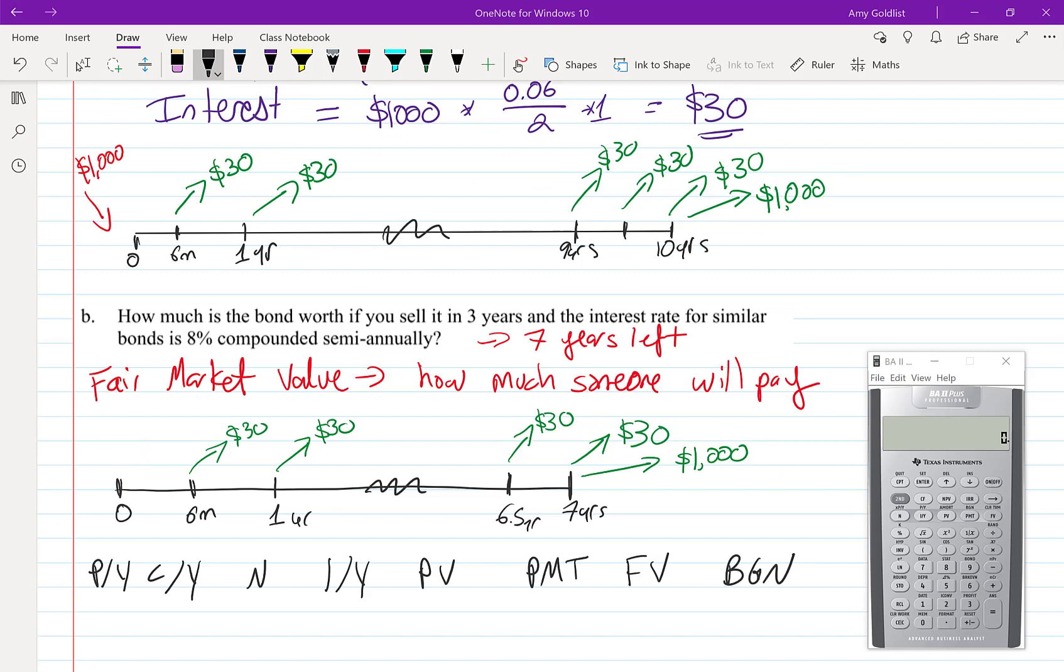Looking at this, we have the exact same timeline except for the fact that we only have seven years remaining—three years have already happened. This is an ordinary annuity. It's also simple because our interest rate is 8% compounded semi-annually and our coupon payments are semi-annual. That makes this a simple ordinary annuity.